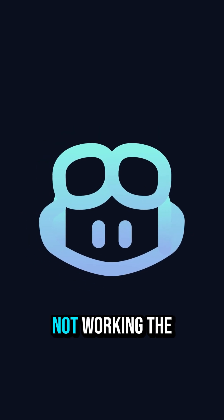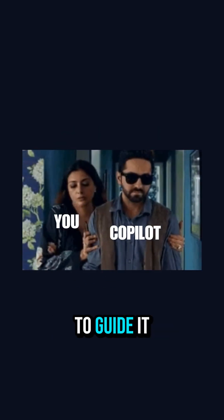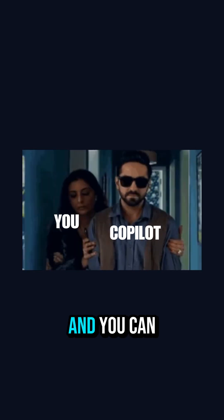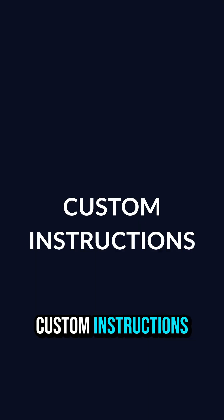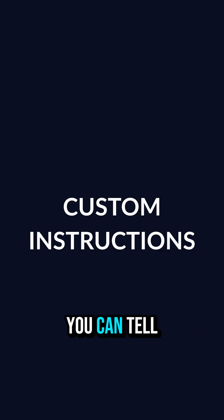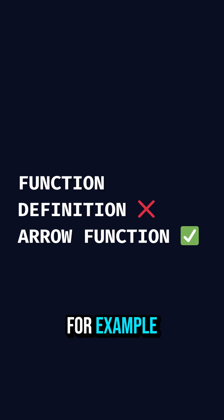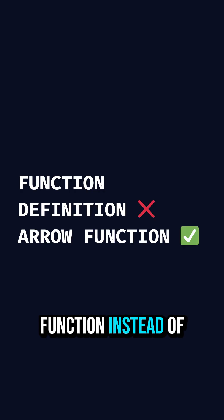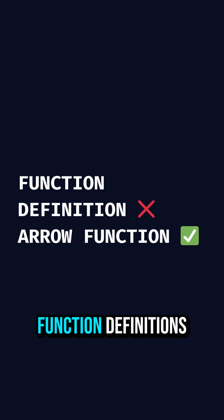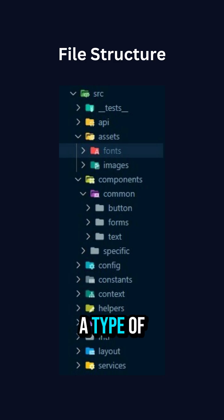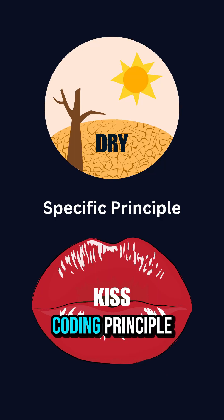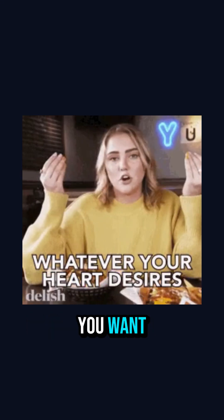If GitHub Copilot is not working the way you want, you might need to guide it, and you can do that with custom instructions. You can tell Copilot how to do things — for example, use arrow functions instead of function definitions, follow a specific file structure, apply a coding principle, or basically whatever you want.